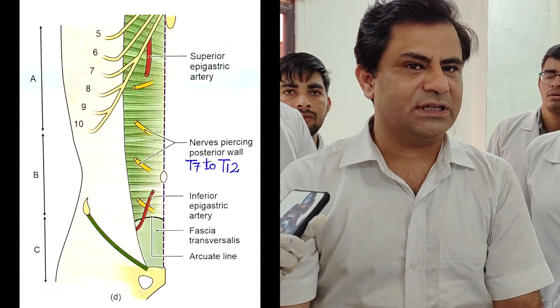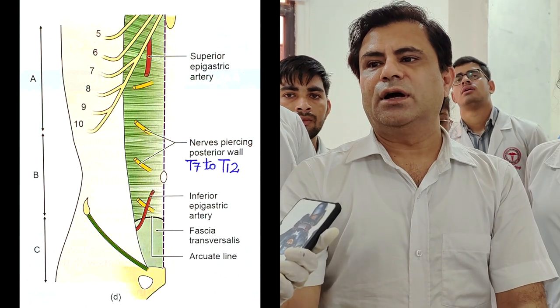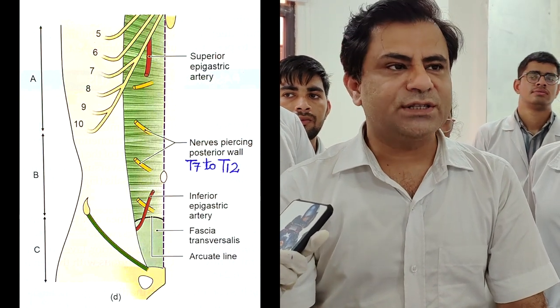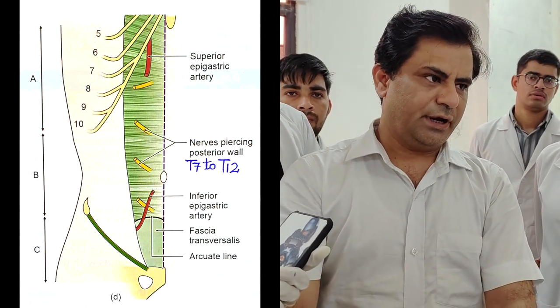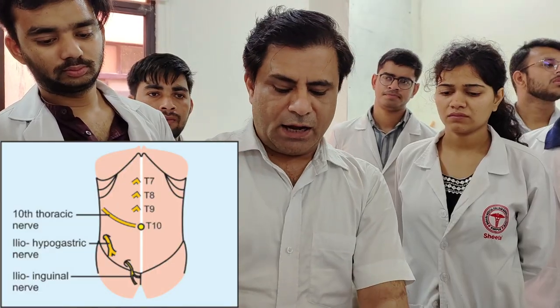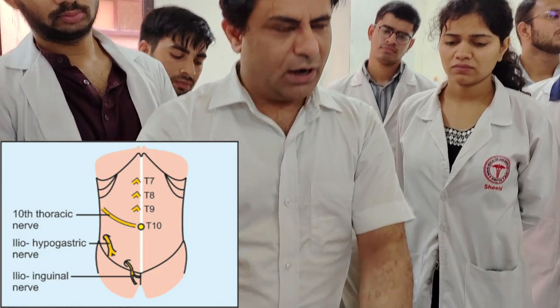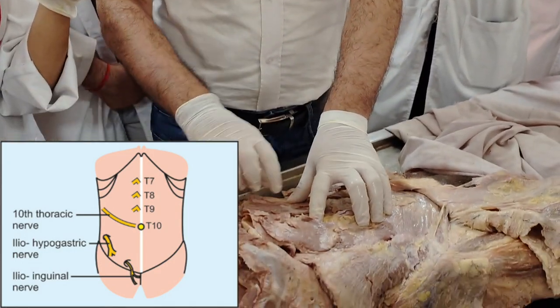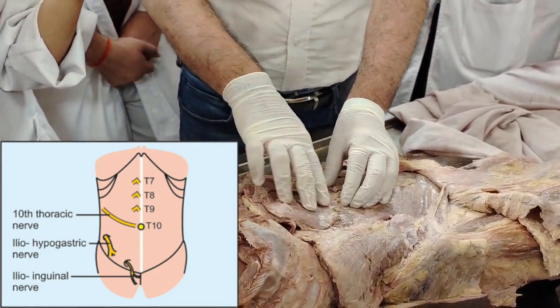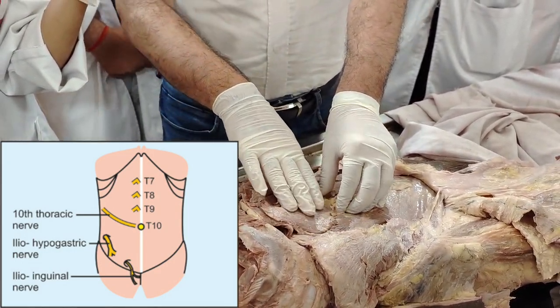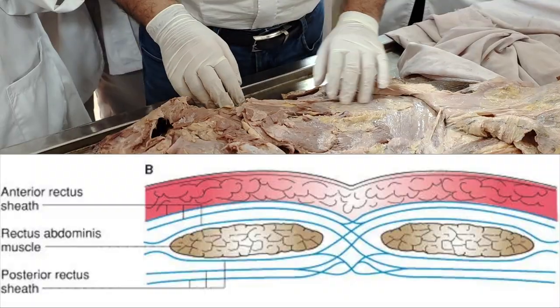The nerve supply of rectus abdominis is the lower six thoracic nerves. T10 will reach to supply the umbilicus and the skin overlying the umbilicus.